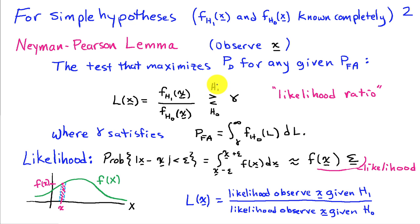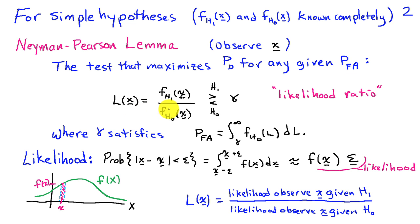The Neyman-Pearson Lemma proves mathematically that the likelihood ratio test does indeed maximize the probability of detection for any given probability of false alarm. It's not too hard to show that the likelihood ratio is indeed the optimal test for the highest probability of detection at any given false alarm probability.